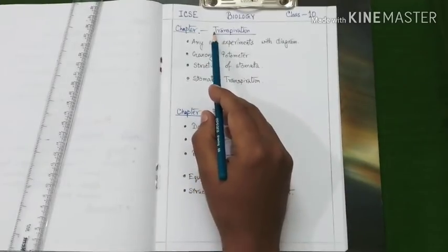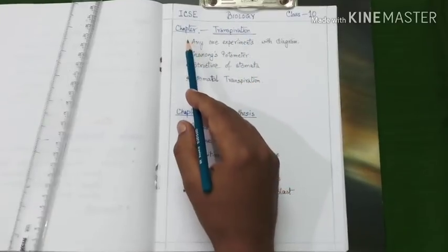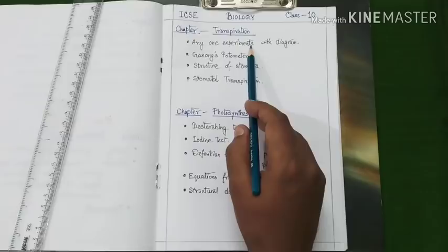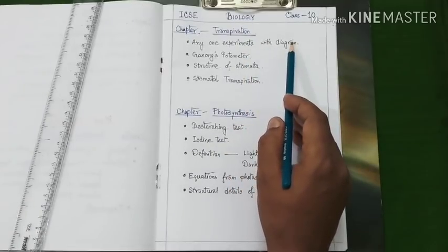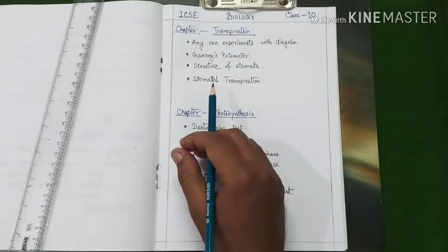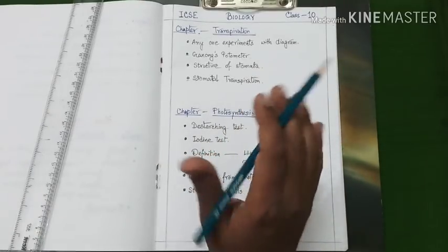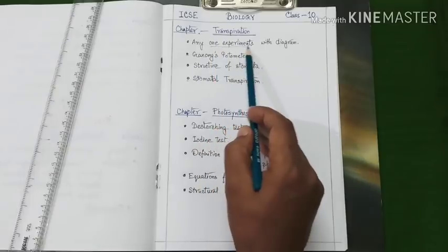Our next chapter is transpiration. These are the important topics under this chapter. First, any one experiment with diagram. Here also you may find different experimental questions with detailed diagram and you can certainly expect any one question on these experiments.